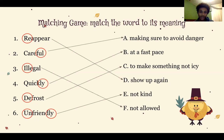For number one, the prefix is re and the base is appear, so the correct definition is d — show up again. Good job. For number two, the suffix is ful and the base is care, so the correct definition is a — make sure to avoid danger. Nice. For number three, the prefix is il and the base is legal, so the right choice is f — not allowed.